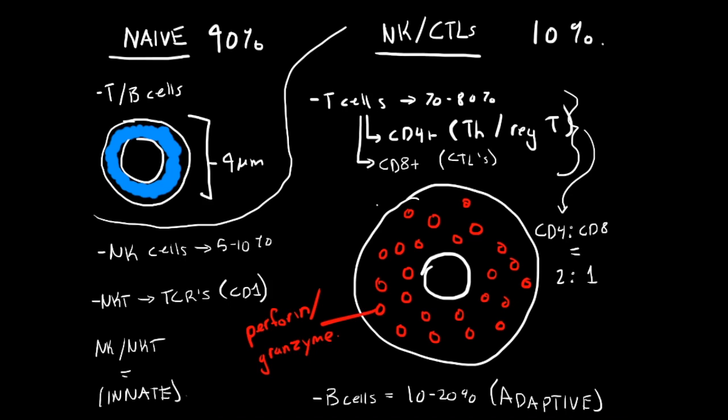Okay, last but not least, we're going to talk about lymphocytes. What are lymphocytes? They fall into two different categories based on morphology. You have naive lymphocytes, which are your T and B lymphocytes when they're naive, obviously when they're young or quiescent.